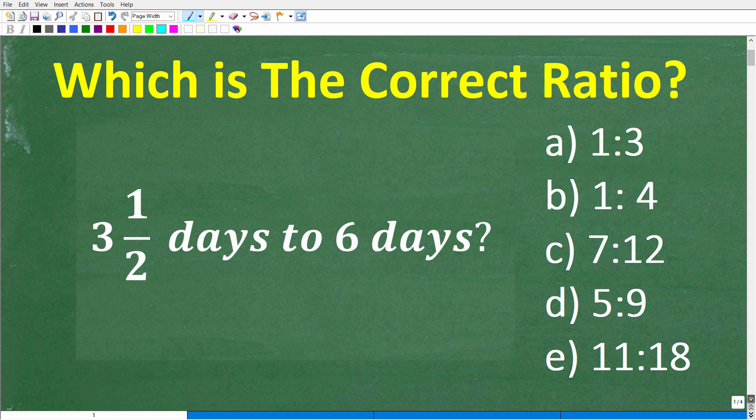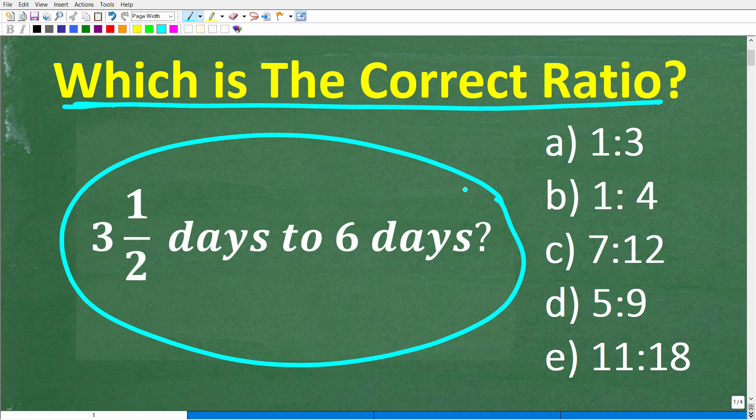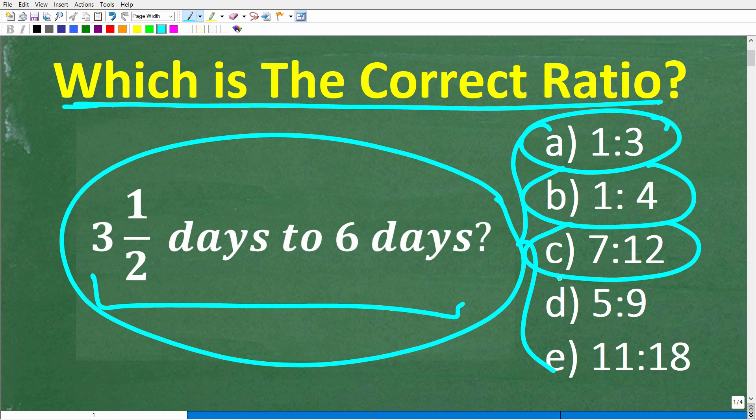Here is the question, and it says the following: which is the correct ratio? So here is the actual problem: 3½ days to 6 days. What is the ratio of this expression? Well, you do have a multiple choice question. A is 1 to 3, B is 1 to 4, C is 7 to 12, D is 5 to 9, and E is 11 to 18.